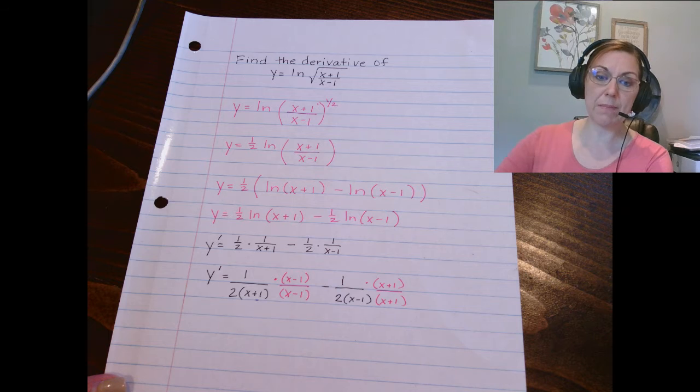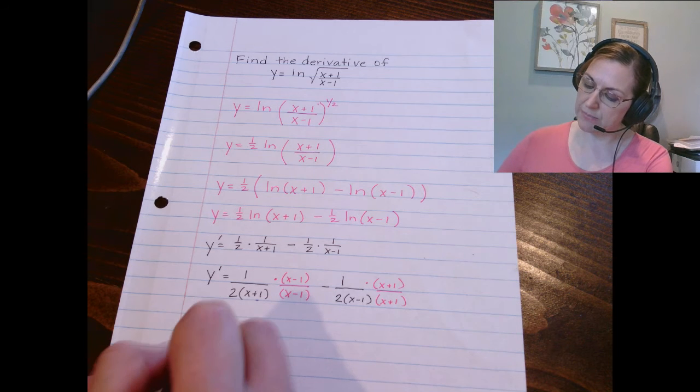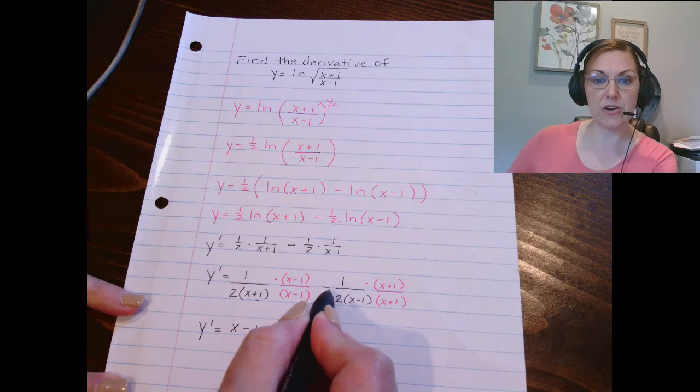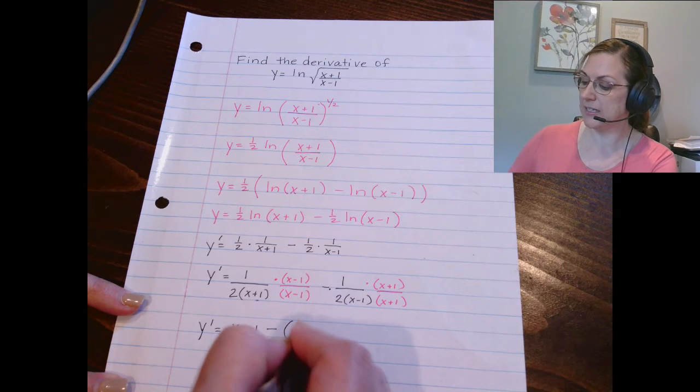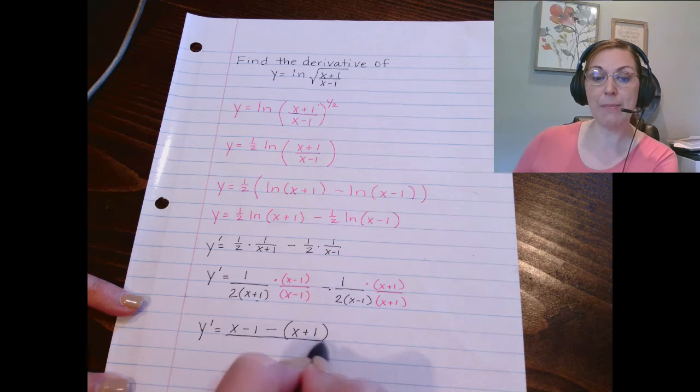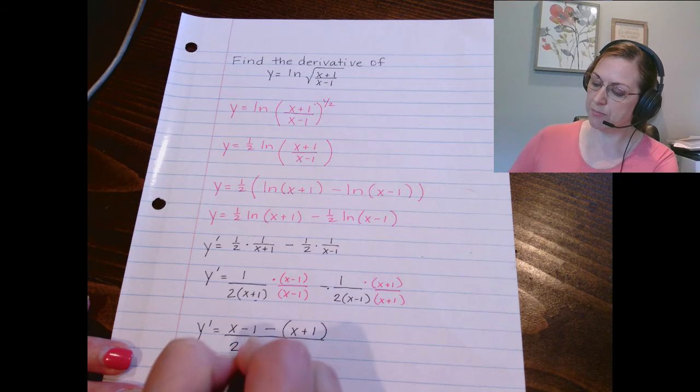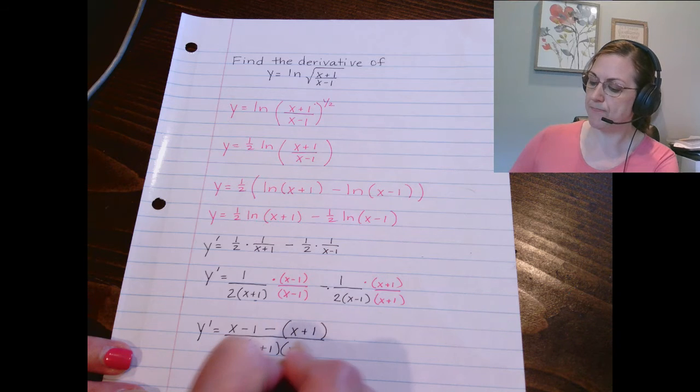Then on the second fraction, I'm going to multiply the top and the bottom by the x plus 1. And so look at what my numerator looks like. It becomes x minus 1 minus here, and then I have to distribute that to the x plus 1. Look at what my denominator becomes. 2 times x plus 1, x minus 1.